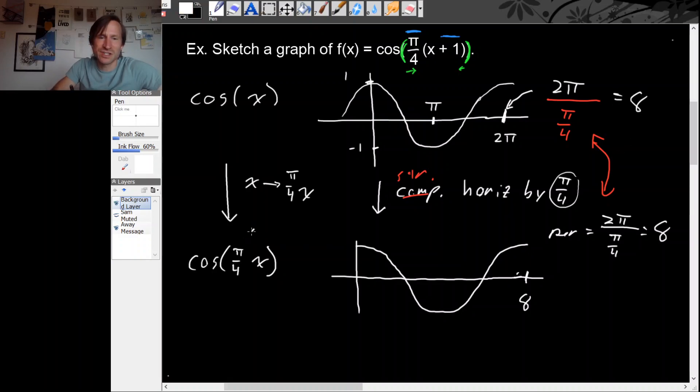So either way you get 8. But putting this coefficient of pi over 4 in here, it divides horizontal coordinates by that coefficient. We haven't done any vertical operations so this graph is still going from plus 1 down to minus 1.